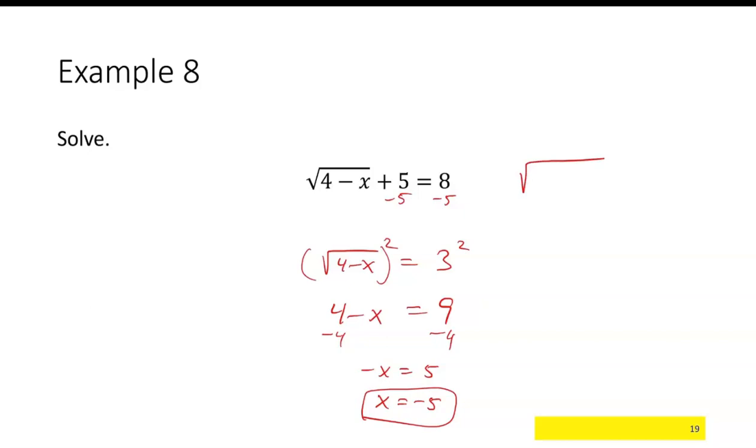If I want to check this, 4 minus negative 5 plus 5. That's going to be equal to the square root of 4 minus negative 5 is 4 plus 5, so the square root of 9 plus 5 is 3 plus 5, and that is indeed 8. So it does check.